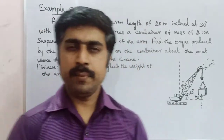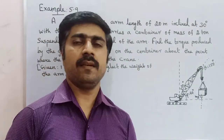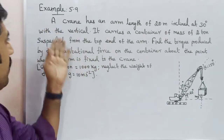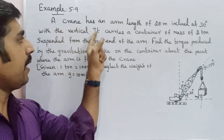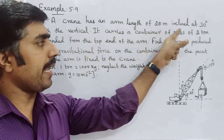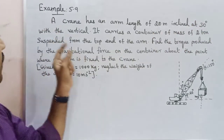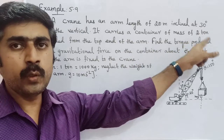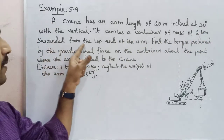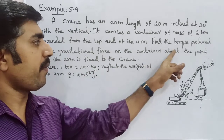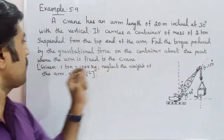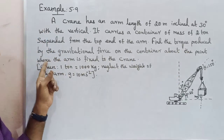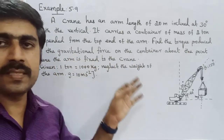Hi students, now we are going to discuss 11th physics, 5th unit. Example 5.9. See the question: a crane has an arm length of 20 meters inclined at 30 degrees with the vertical. It carries a container of mass 2 tons suspended from the top end of the arm. Find the torque produced by the gravitational force on the container about the point where the arm is fixed to the crane.